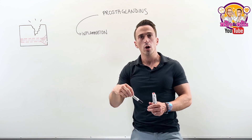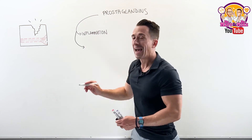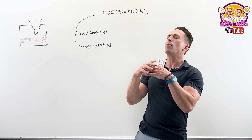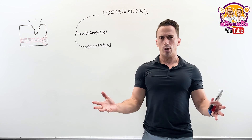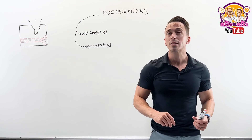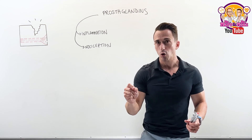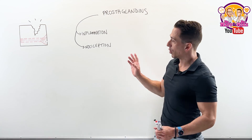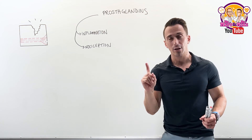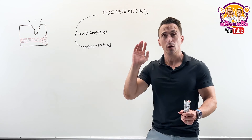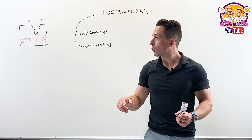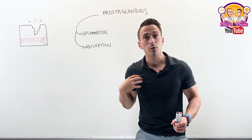What else do prostaglandins do? They're very good at stimulating nociception. We have a whole multitude of different receptors in our body — some pick up chemicals, some pick up temperature — but nociceptors pick up noxious or potentially damaging stimuli. Prostaglandins can trigger nociceptors to send a signal up to the brain, and the result is that you experience pain.